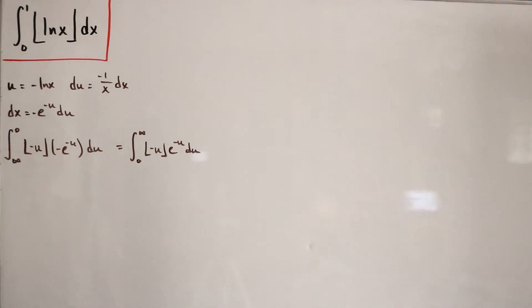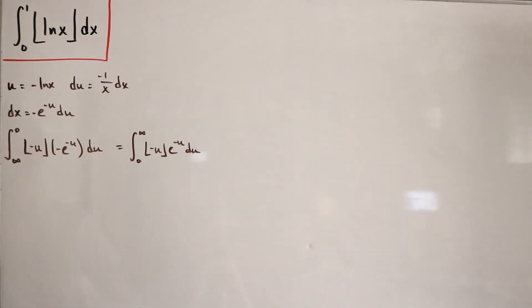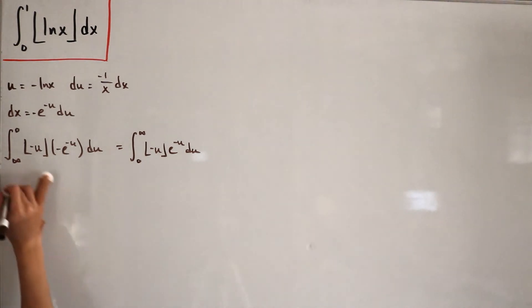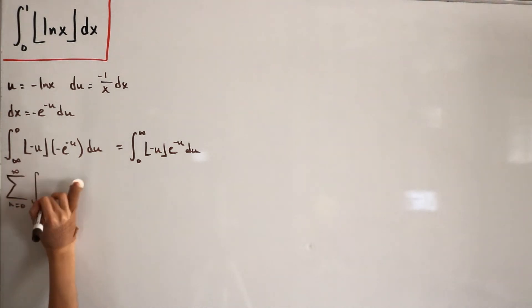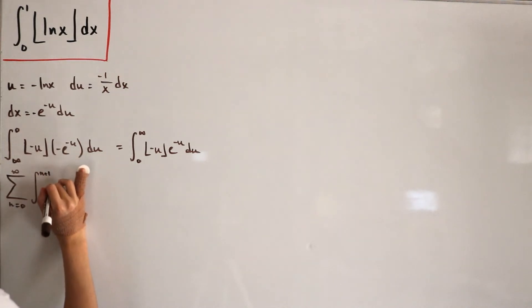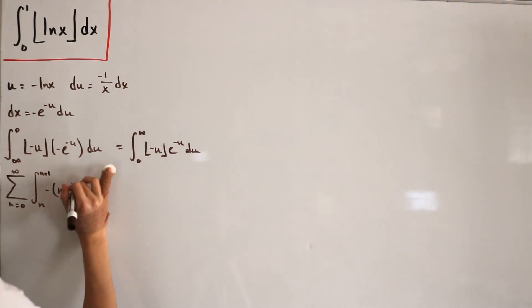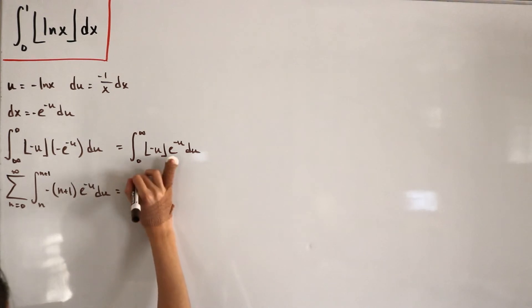Now we need to handle floor(-u). For u ∈ [n, n+1), where n is a non-negative integer, floor(-u) = -(n+1). Using this, we can apply the infinite sum: the integral breaks into a sum from n = 0 to ∞ of the integral from n to n+1 of -(n+1) · e^(-u) du. We factor out the negative, giving a negative infinite sum.